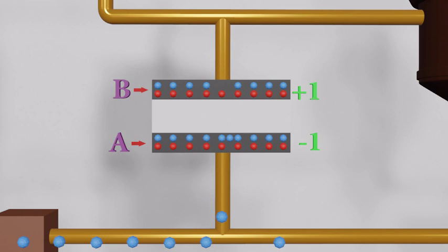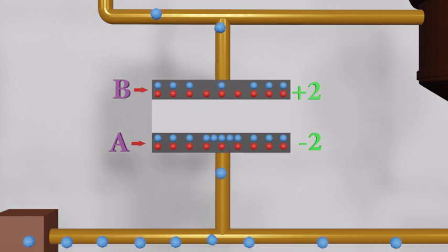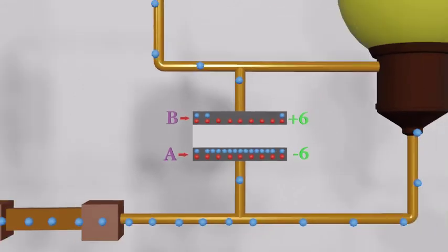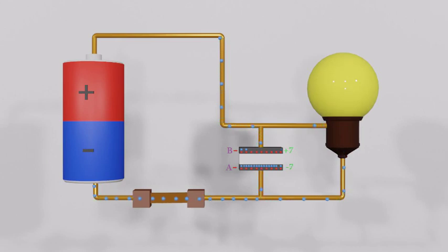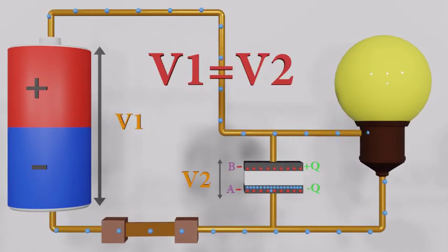The total charge of the capacitor is zero, but inside it has two plates — one with a positive charge and the other with a negative charge. This creates an electromagnetic force opposing the incoming electrons, but the force is not enough to stop them. Plate A and plate B always have the same number of opposite charges. When the potential difference between plates A and B equals the potential difference of the battery, we say the capacitor is fully charged and no more electrons go into it.